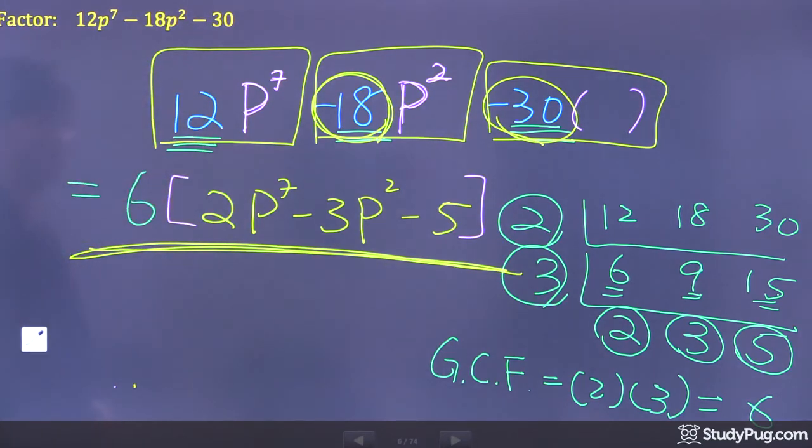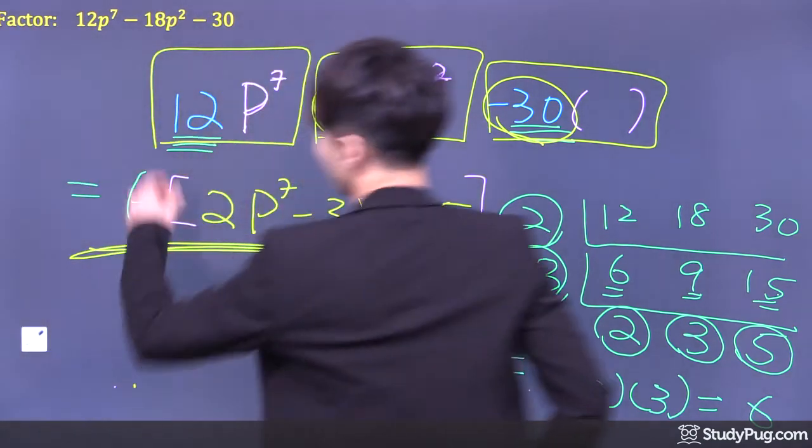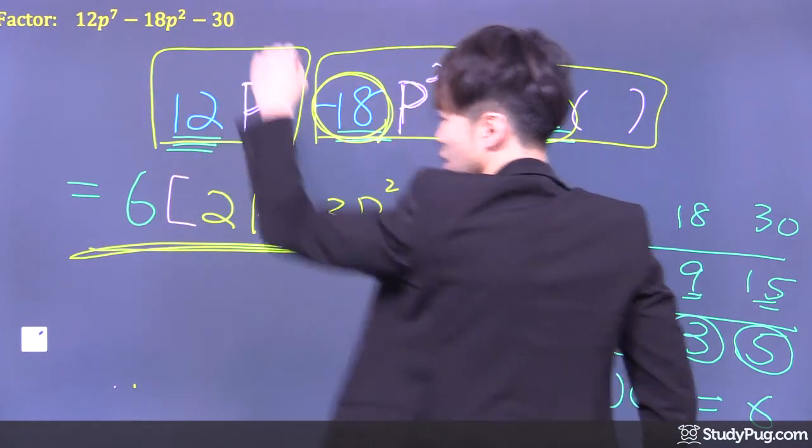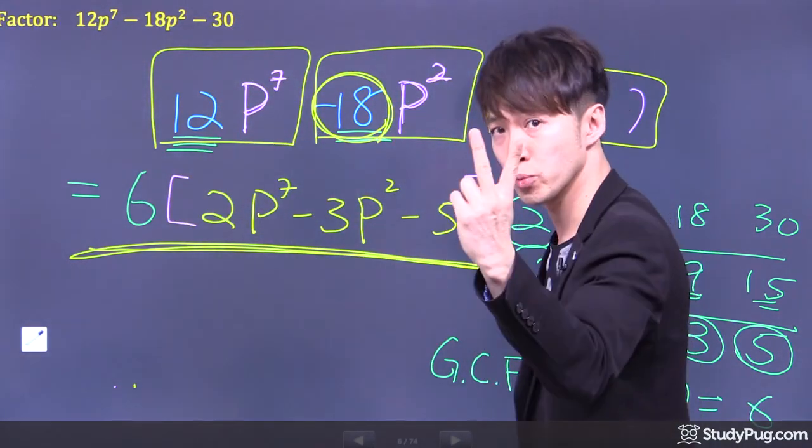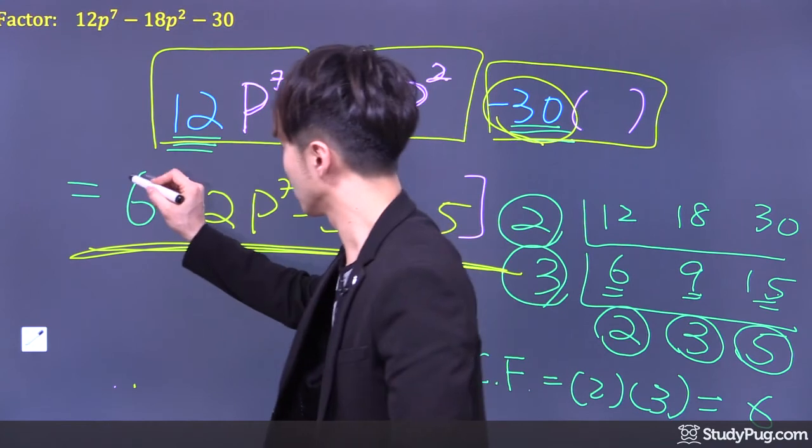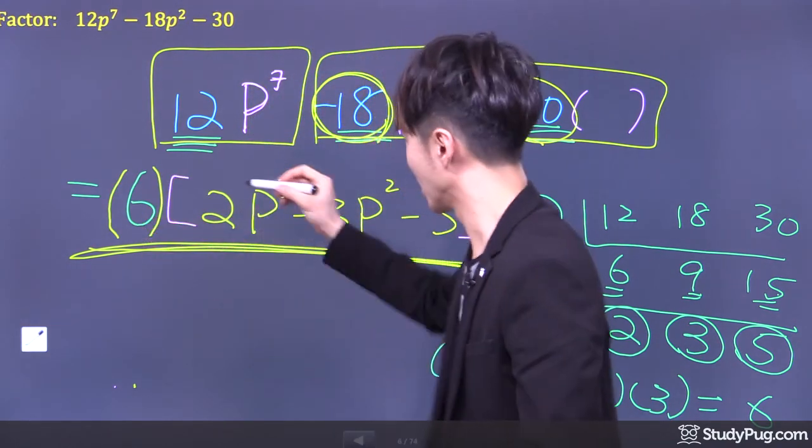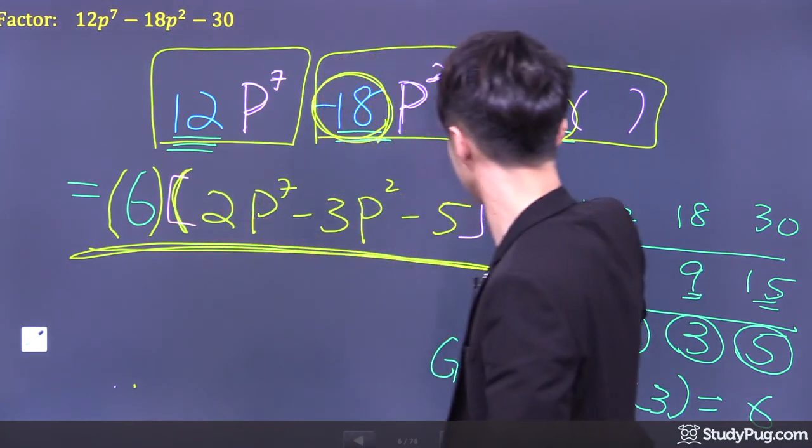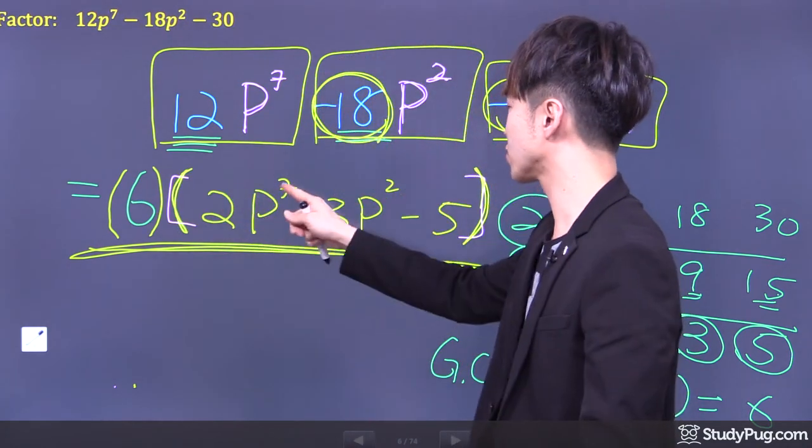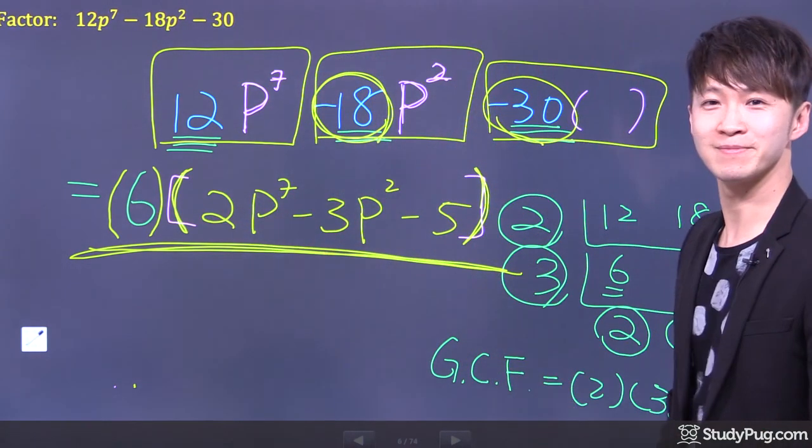So we successfully factored this polynomial as the product of two polynomials. First polynomial is 6, happens to be just a constant. And the second polynomial right here is 2p to the power of 7 minus 3p squared minus 5.